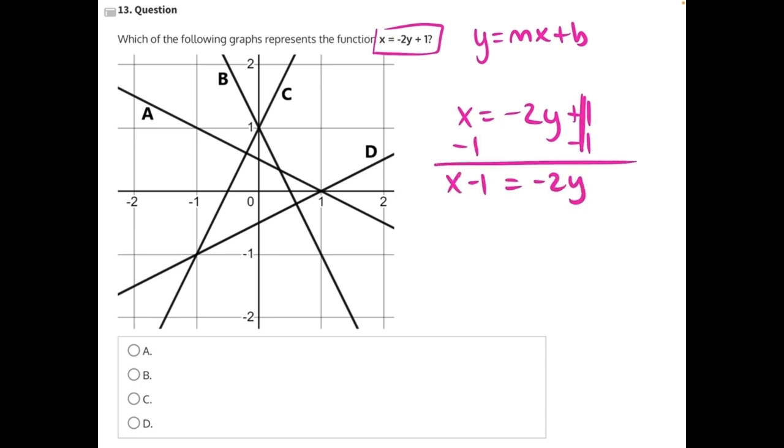Then negative 2 is being multiplied to y, so we need to do the opposite and divide everything by 2. These 2s will cancel, giving us x over negative 2, and these negatives are going to cancel, giving us a positive 1 half equals y.